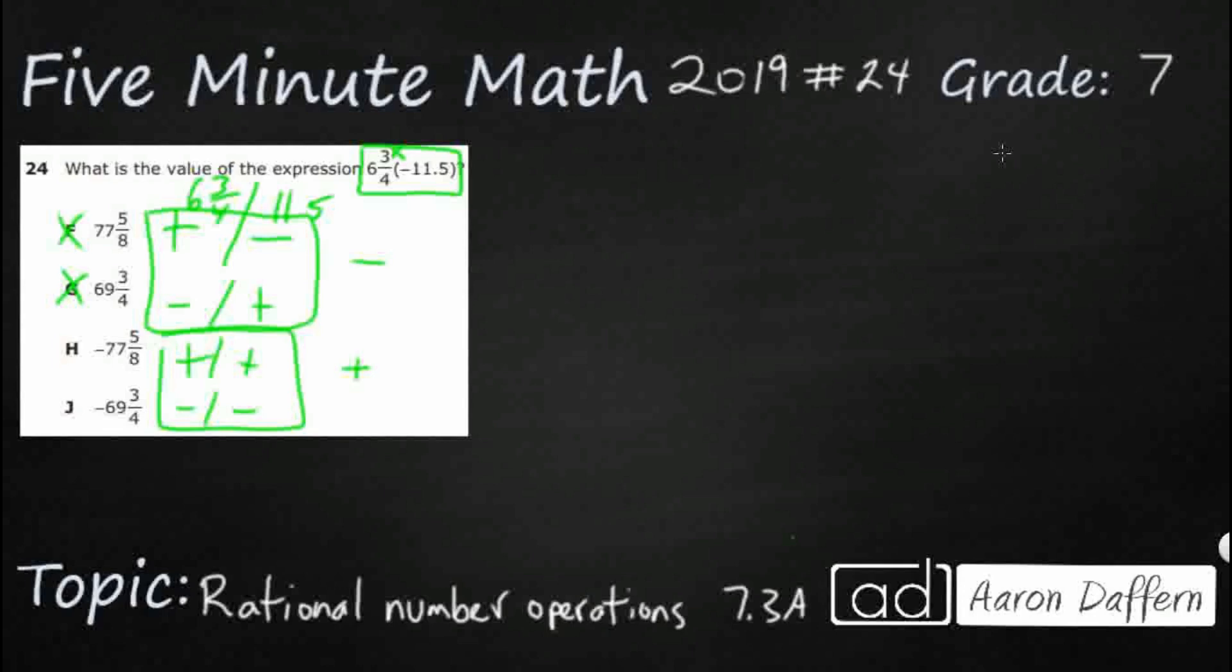Let's turn these both into a decimal first. So 6 and 3 quarters, we need to know that 6 and 3 quarters is going to be 6.75. That 3 quarters, 3 fourths is 0.75. If you're not sure how to turn that into a decimal, always just divide: 4 goes into 3, 0 times, add enough zeros, and you're going to get 0.75.